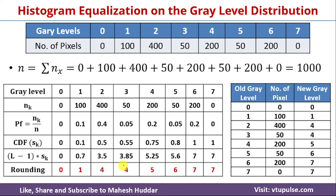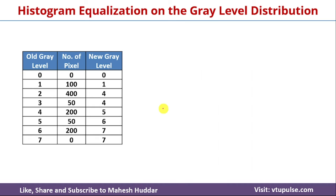The same information is written in the table, showing the old levels, old number of pixels, and the new gray levels. Once we calculate these new gray levels, we need to draw the histogram, placing gray levels on the x-axis and number of pixels on the y-axis.